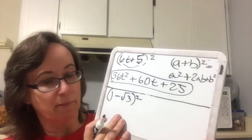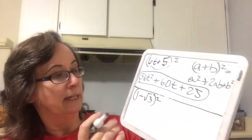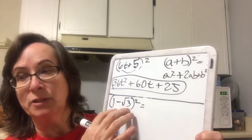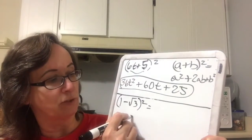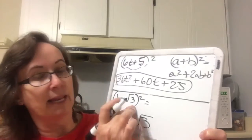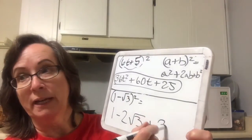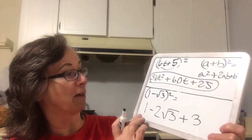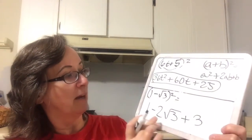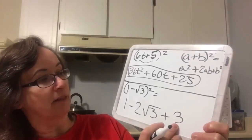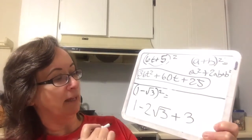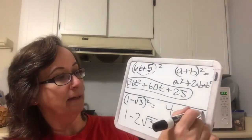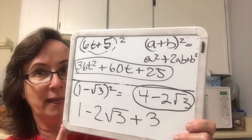Now we're going to do the same thing with a radical. The first term squared is 1. The product — negative square root of 3 doubled — is negative 2 square root of 3. And the last term squared is plus 3. So the 1 and the 3 go together to give me 4 minus 2 square root of 3.